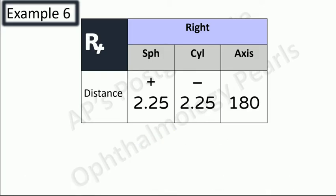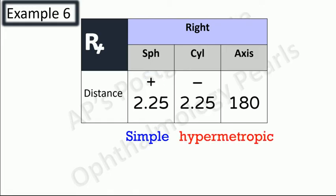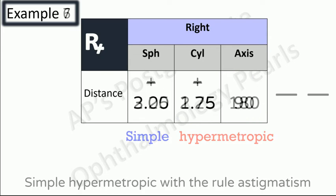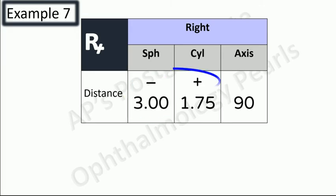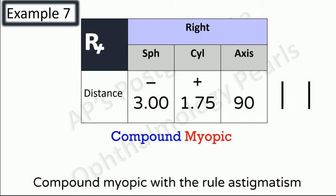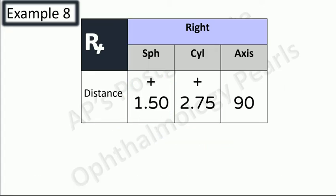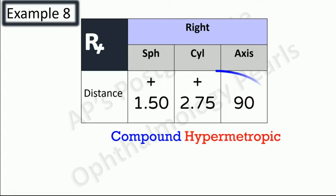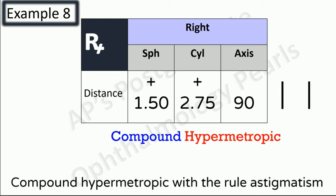Example six: sphere has a number, signs are different, sphere and cylinder are numerically equal so simple; sign is plus so hypermetropic; both lines in same direction so with-the-rule — simple hypermetropic with-the-rule astigmatism. Example seven: sphere has a number, signs are different, sphere is greater so compound; sign is minus so myopic; both lines in same direction so with-the-rule — compound myopic with-the-rule astigmatism. Example eight: sphere has a number, signs are the same so compound; sign is plus so hypermetropic; both lines in same direction so with-the-rule — compound hypermetropic with-the-rule astigmatism.